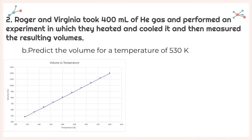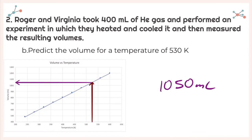For the next one, it says predict the volume for a temperature of 530 degrees Kelvin. Let's see where 530 is — it's right about there. Let's see what volume it gives us. It's about 1,050 or so — I'm going to say 1,050 milliliters.